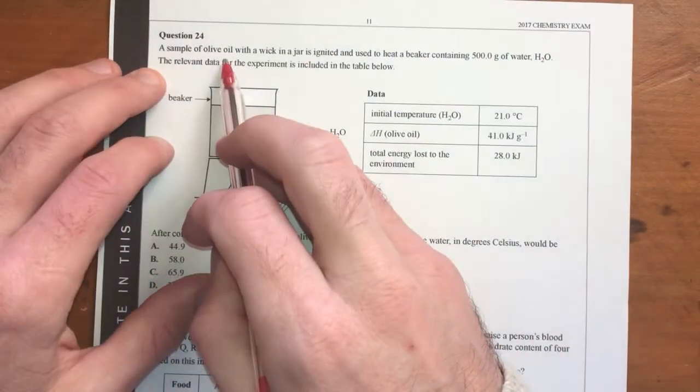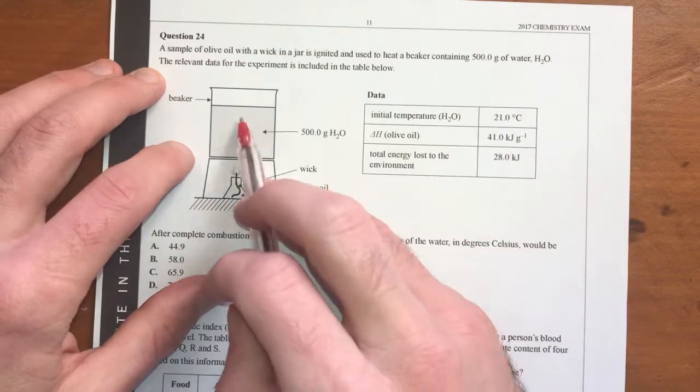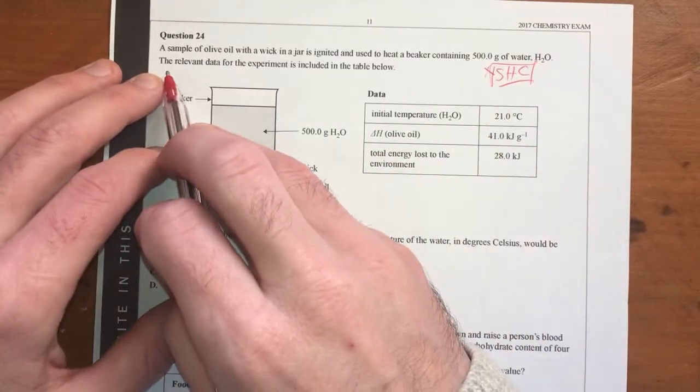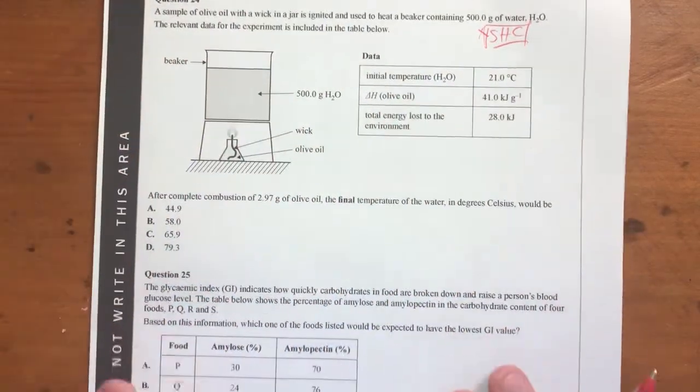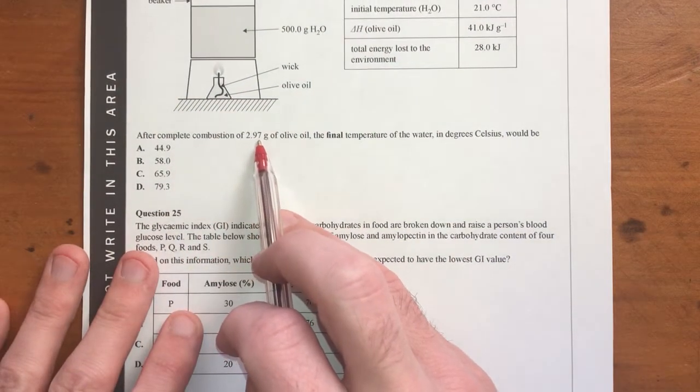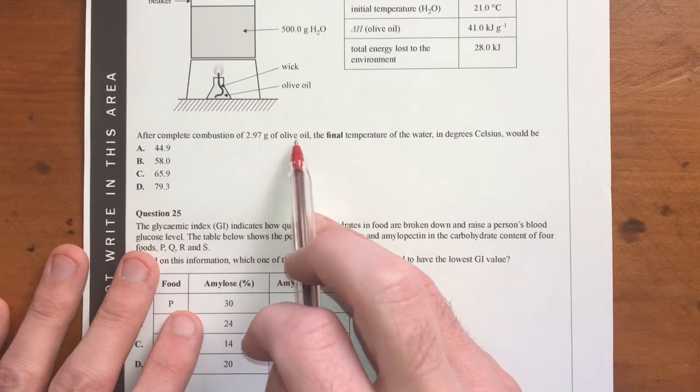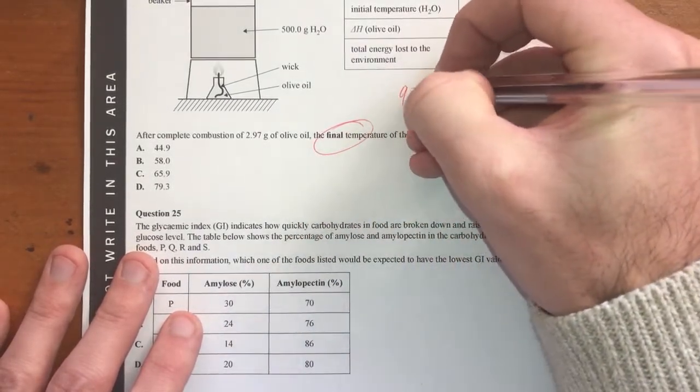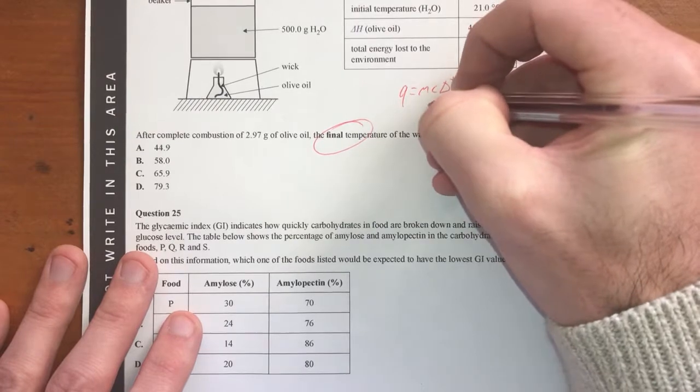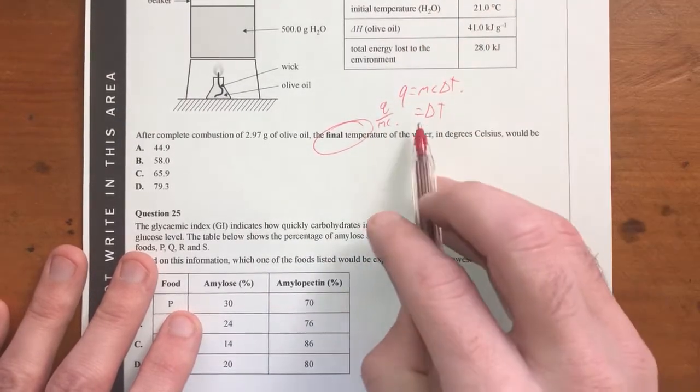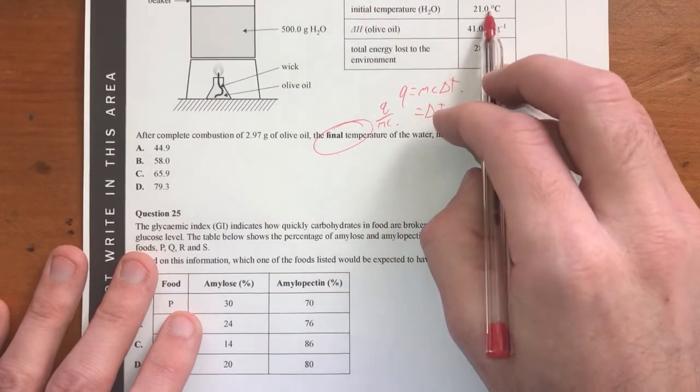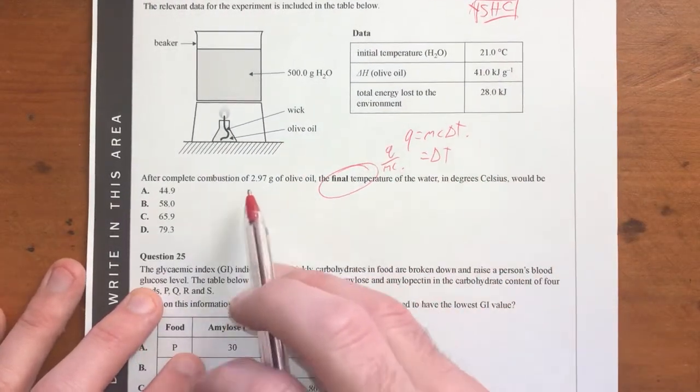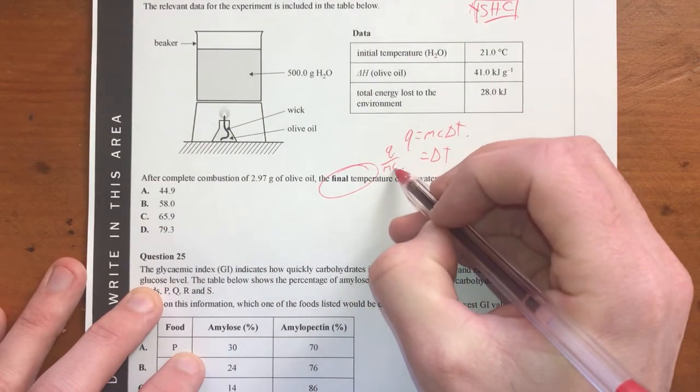Question 24. A sample of olive oil with a wick in a jar is ignited using this apparatus here. We've got 500 grams of water. What this says, I'm going to use specific capacity for this question straight away. The relevant data for this is here. So after the combustion of 2.97 grams of olive oil, the final temperature in degrees Celsius would be what? Alrighty. So if I want to find final temperature, that means I'm going to be using Q equals MC delta T. And I want to find delta T. So delta T equals Q over MC.